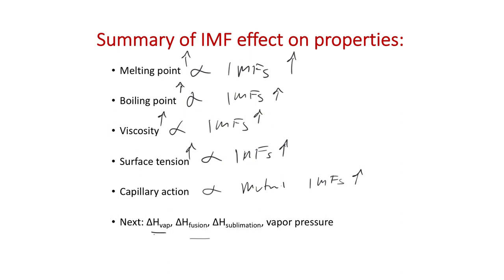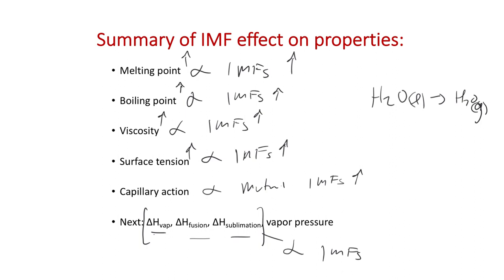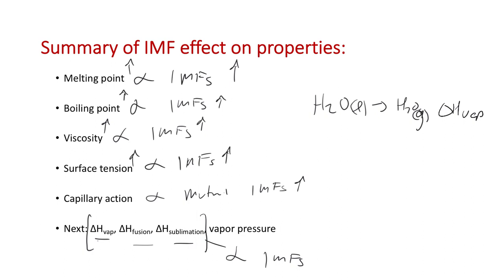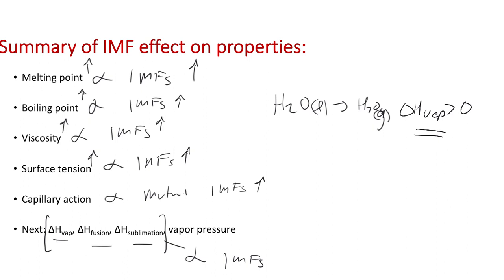We'll talk about enthalpies of vaporization, fusion, and sublimation. These should also be directly related to intermolecular forces. The enthalpy it takes to vaporize a substance — liquid water to water gas — should be related to the strengths of intermolecular forces. For a liquid to boil, this is endothermic, meaning we add heat. So if you increase the forces of attraction, you increase the enthalpies of vaporization, fusion, and sublimation.